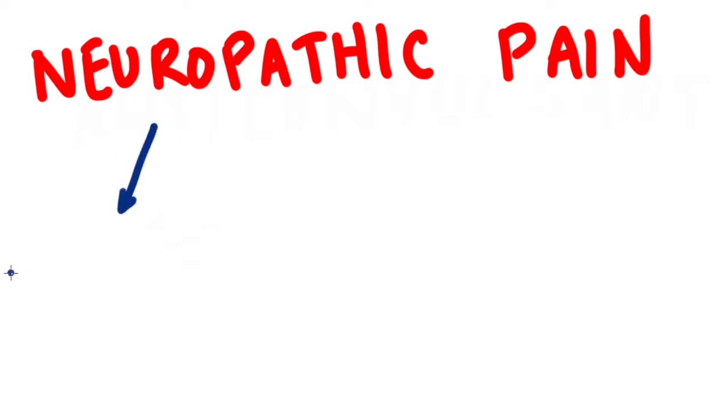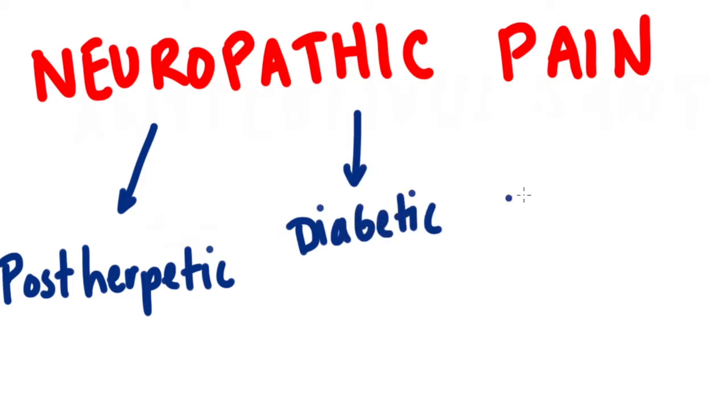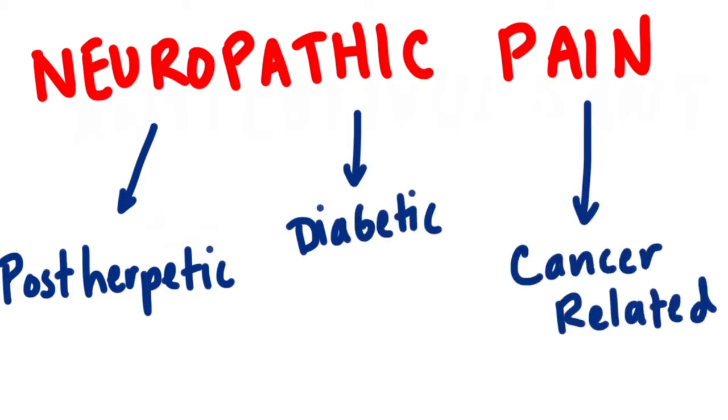These include postherpetic neuralgia, caused by shingles, diabetic neuropathy, caused by diabetes, and cancer-related neuropathy, caused by side effects from chemotherapeutic drugs.